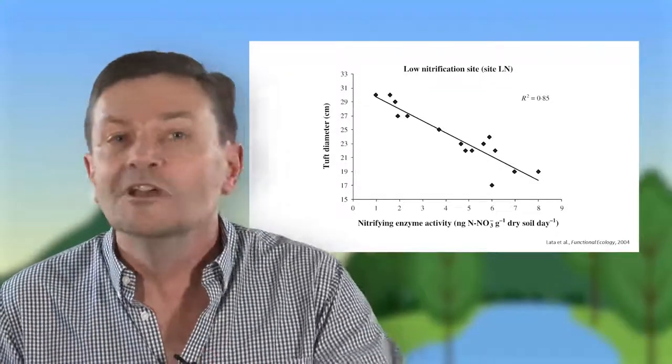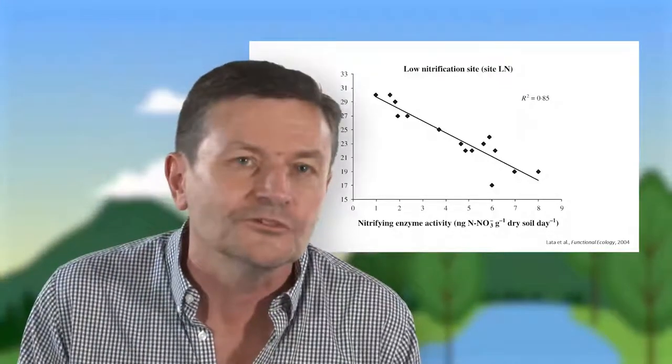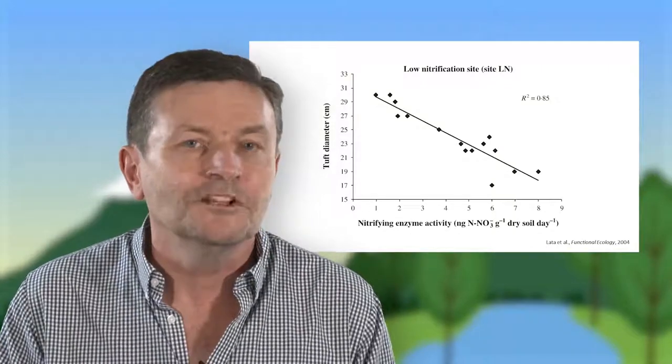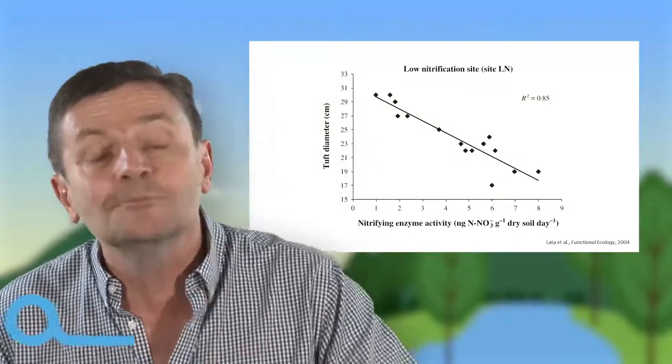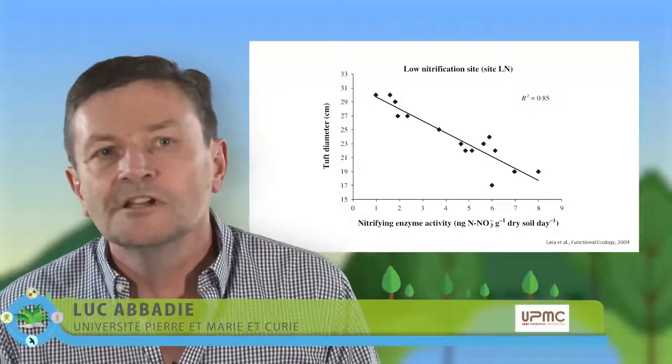Si vous n'avez pas de nitrate, vous avez de l'ammonium. L'ammonium, il reste dans le système, et donc la nutrition azotée de la plante est améliorée. Les plantes sont capables, ont développé des stratégies d'amélioration du recyclage des éléments nutritifs.